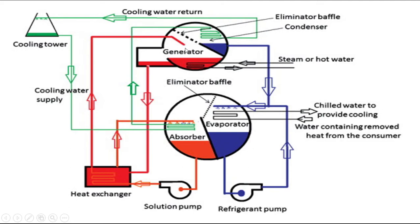The vapor refrigerant — water vapor — separated from the weak solution enters the condenser side. The eliminator baffle prevents entry of lithium bromide solution into the condenser, so only water vapor enters. In the condenser, the water vapor is cooled by the cooling water and condensed. The latent heat of the water vapor is rejected to the cooling water. The liquid water is then expanded in an expansion device and sprayed from the top of the evaporator.